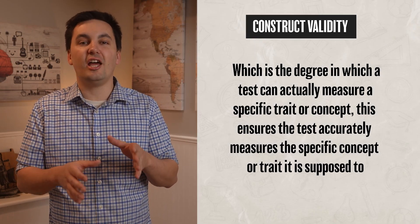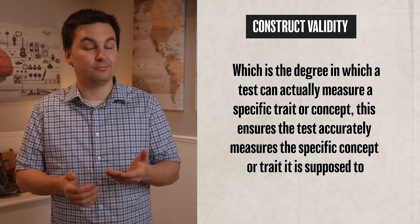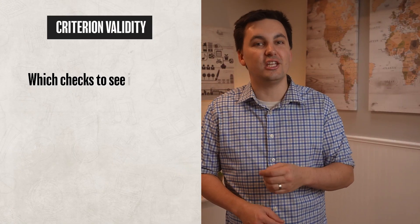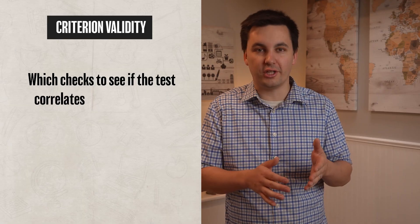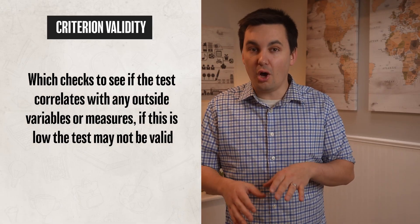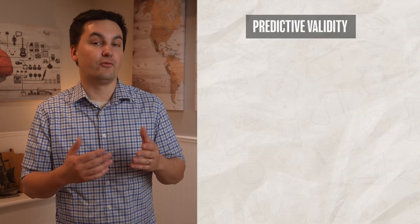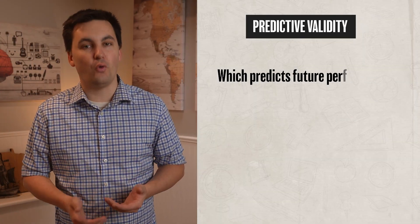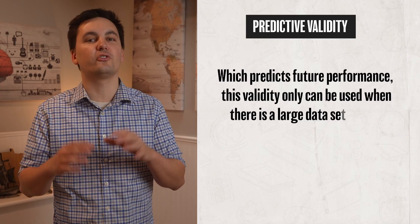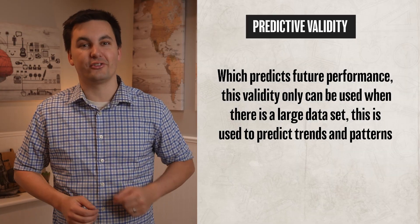Construct validity essentially ensures that the test accurately measures the specific concept or trait it's supposed to. Then there is criterion validity, which checks to see if the test correlates with any outside variables or measures — if this is low, the test may not be valid. And lastly, predictive validity, which predicts future performance. This type of validity is used when there is a large dataset to predict trends and patterns.